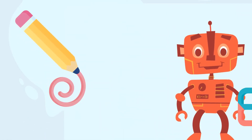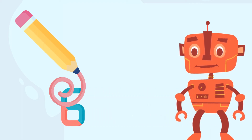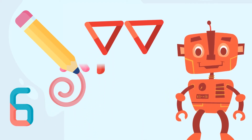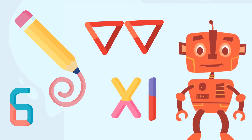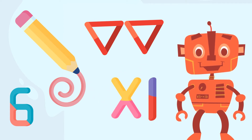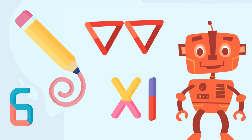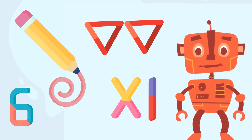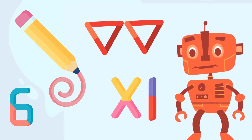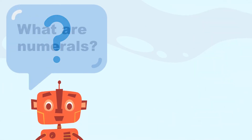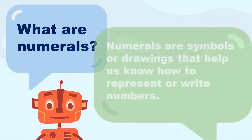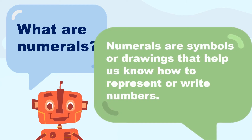There are all sorts of ways to represent numbers, but where do they come from? Who came up with these symbols or drawings used to write them? Throughout history, different civilizations have come up with different symbols or drawings to represent numbers — called numerals. Numerals are symbols or drawings that help us know how to represent or write numbers.